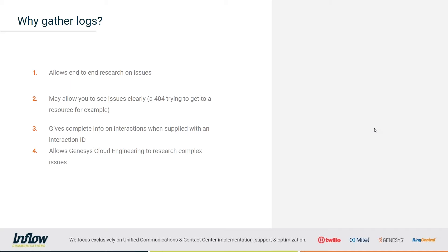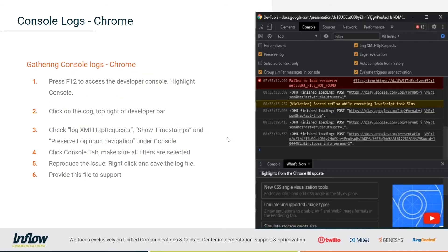If there is a call quality issue, the correlation IDs and logs also allow Genesis Cloud engineering to research complex issues. If you have something going on that requires extra time, this will still give them exactly what they need to pinpoint the problem. There are two different kinds of logs you'll need to get — from either Chrome, Firefox, or the desktop application. One is the console logs, which contain detailed console information Genesis Cloud needs to determine what might be happening.